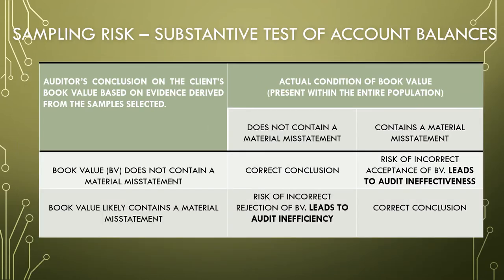This is sampling risk on substantive test of account balance. Similarly, look at these two columns. The first column is the auditor's conclusion on the client's book value — related to monetary unit sampling — based on evidence derived from the sample selected. The second column is the actual state of book value present within the entire population, which we cannot know for certain, so we categorize into two states.